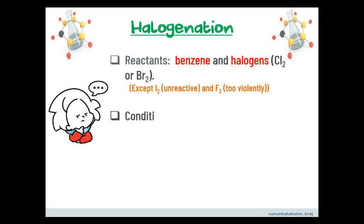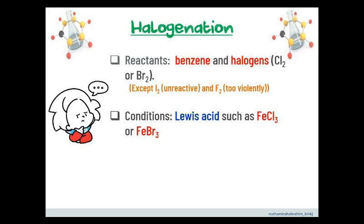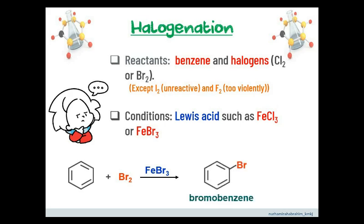The condition for the reaction to occur must include a Lewis acid, such as iron(III) chloride or iron(III) bromide. For example, when benzene reacts with bromine gas in the presence of iron(III) bromide, the products formed are bromobenzene — where one hydrogen is replaced by one bromine — and hydrogen bromide, where the hydrogen from benzene bonds with the leftover bromine atom.